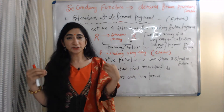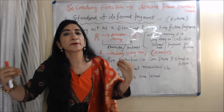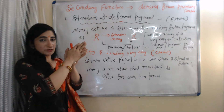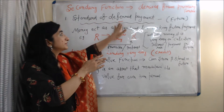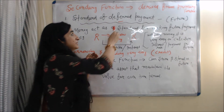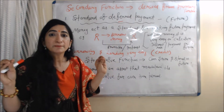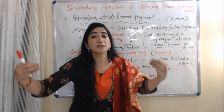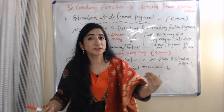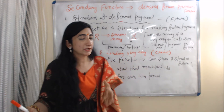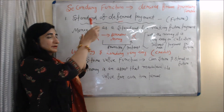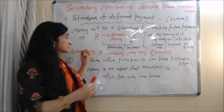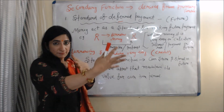Now we talk about the secondary function of money. The secondary function of money is derived from the primary function of money. The first secondary function is standard of deferred payment. Deferred payments are basically future payments — for example, when you purchase something now but pay for it in the future, it is called a deferred payment.